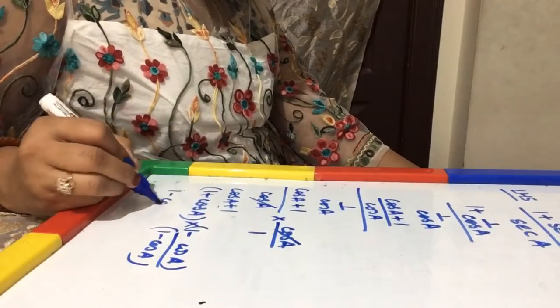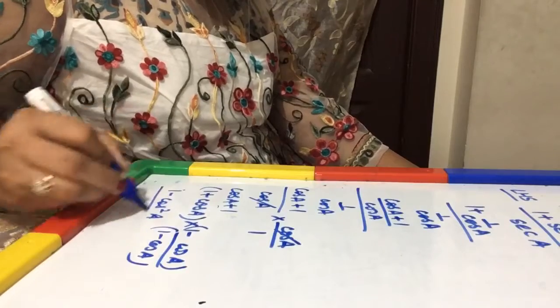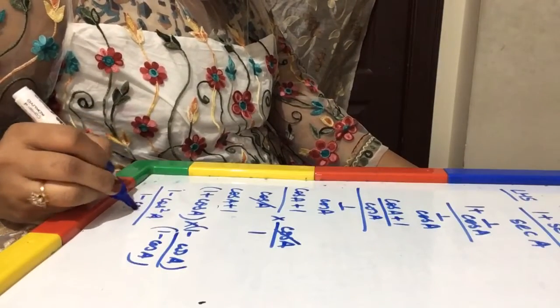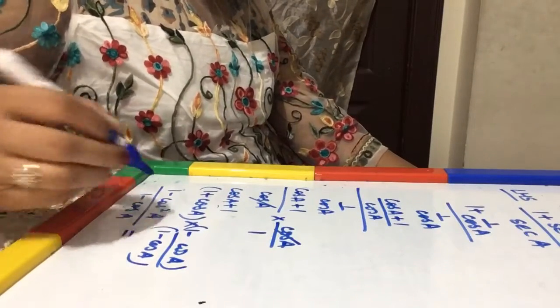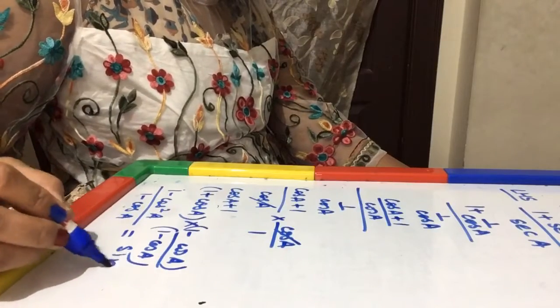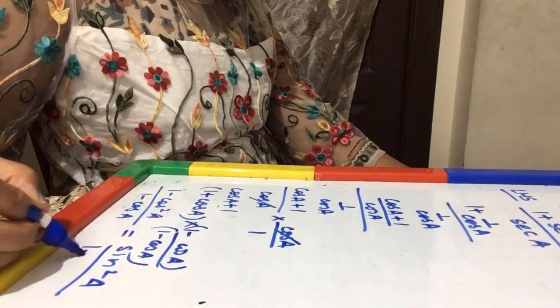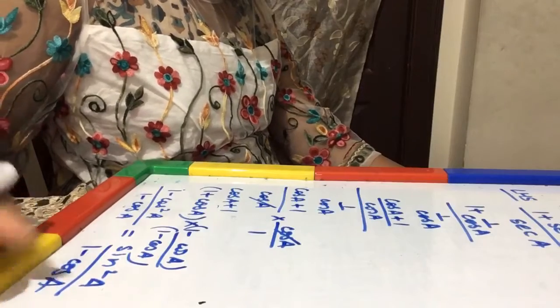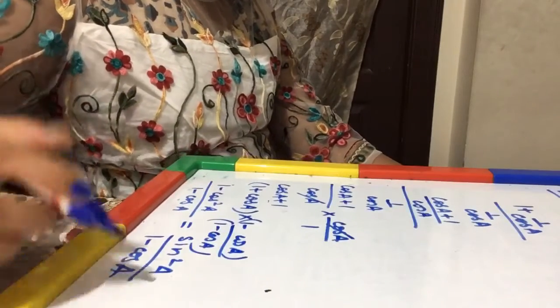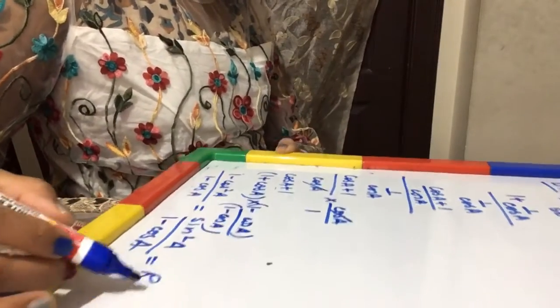So this will become (1 - cos²A) / (1 - cos A). And 1 - cos²A is equal to sin²A. So this becomes sin²A / (1 - cos A), which is equal to RHS.